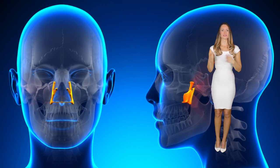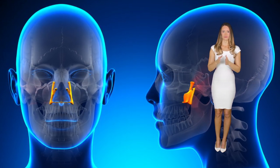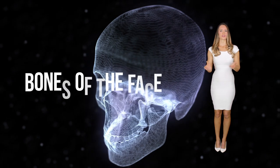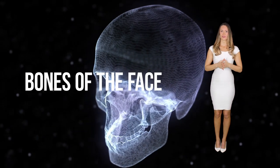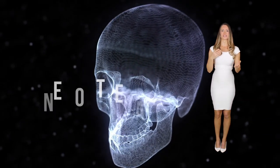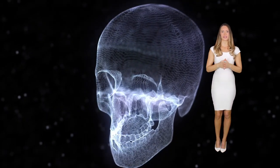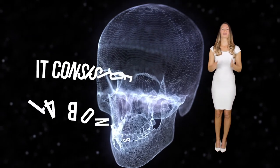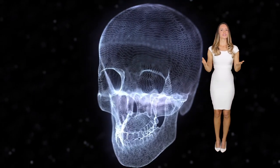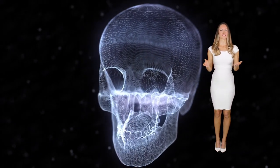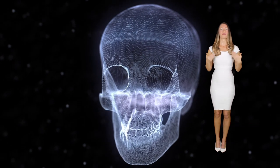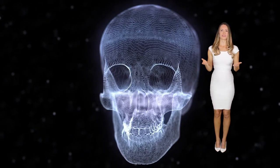Bones of the face are also part of the skull, and the face is referred to as the splanchnocranium. It consists of 14 bones. Each of the facial bones is in pairs of two, making up the two sides of the face.